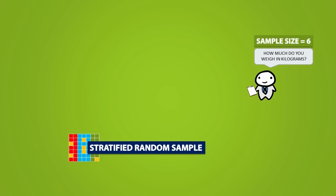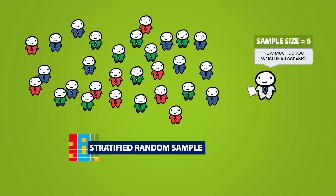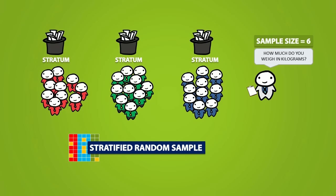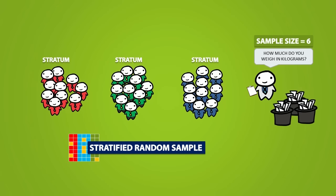For a stratified random sample, we take the population and we divide it into something called a strata. Strata refers to the groups of similar people. Within each stratum, we take an SRS and combine the SRSs to get the full sample.